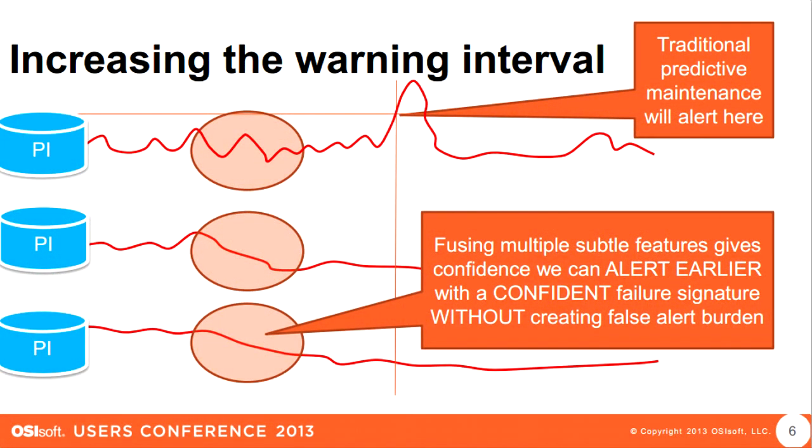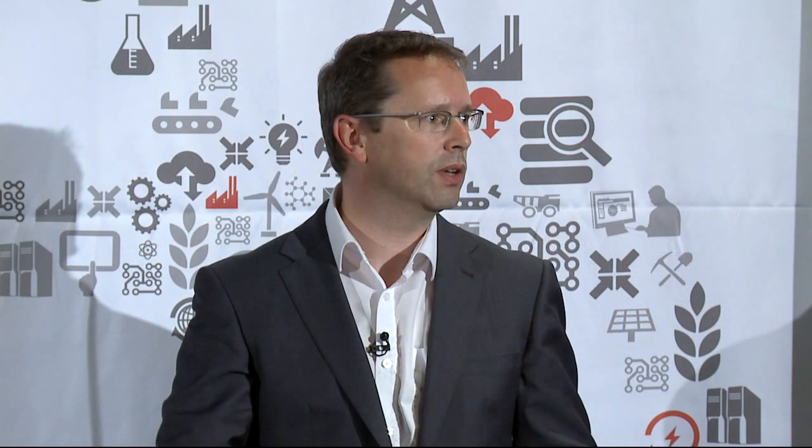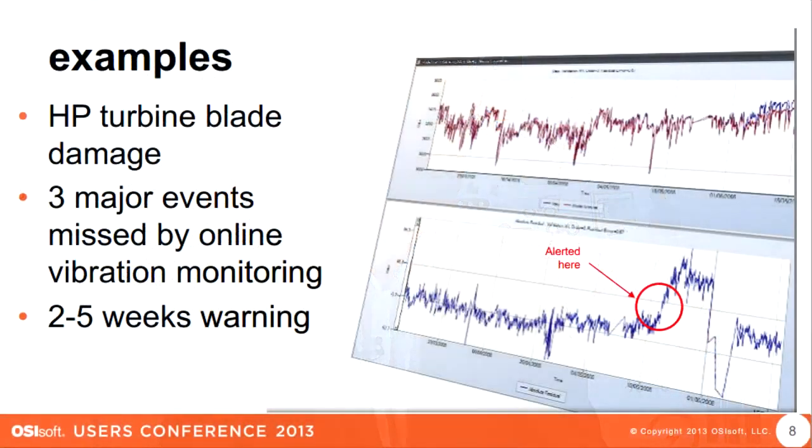We reverse that. We use engineering knowledge and insight to design a failure signature within all the different strands of data that might be coming from the assets. And then we know, as engineers, that a little bit of shift here and a little wobble on the vibration — individually none of those make any sense at all. But when you put them together and you know what you were looking for, you can get a really confident early diagnosis.